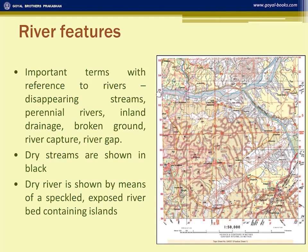You can see white patches in the river — these are known as islands. You can also see some streams that are not meeting the main river.